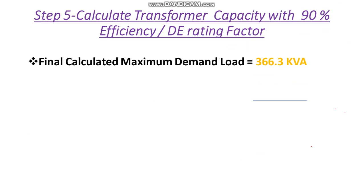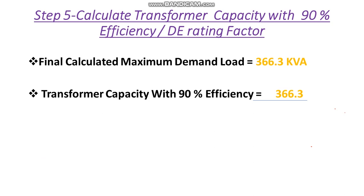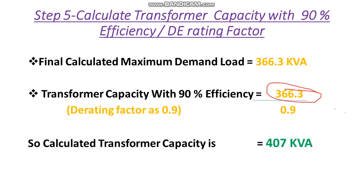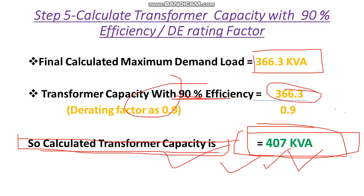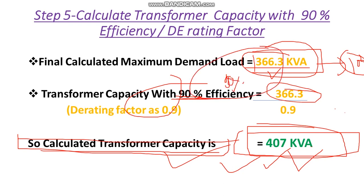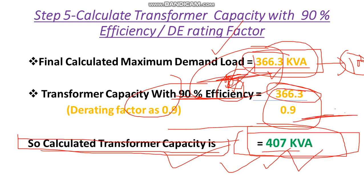Our calculated maximum demand load is 366.3 kVA. We divide this by the derating factor of 0.9 to get the required transformer capacity: 366.3 ÷ 0.9 = 407 kVA. This is the final calculated transformer size. If we had selected based only on the maximum demand load without applying the derating factor, we would not be able to properly connect that load because we should only load the transformer to 90% of its rating.